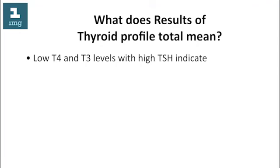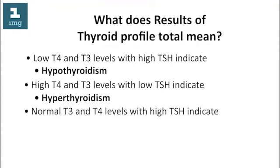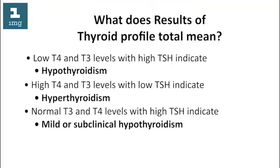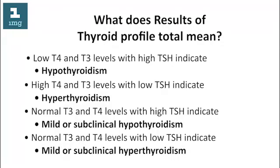What do the results of thyroid profile total mean? Low T4 and T3 levels with high TSH indicate hypothyroidism. High T4 and T3 levels with low TSH indicate hyperthyroidism. Normal T3 and T4 levels with high TSH indicate mild or subclinical hypothyroidism. Normal T3 and T4 levels with low TSH indicate mild or subclinical hyperthyroidism.